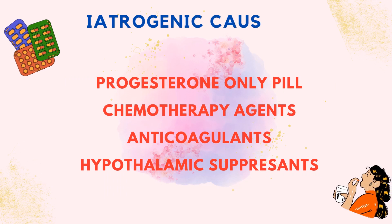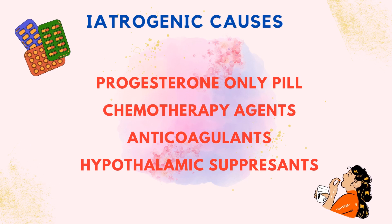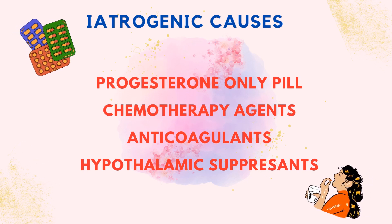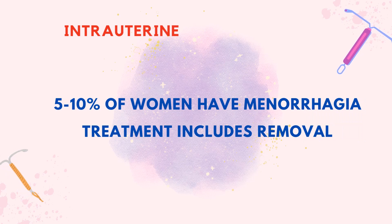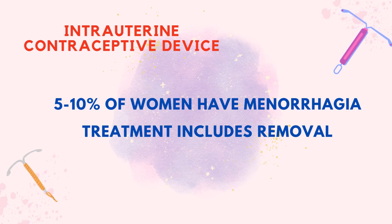The iatrogenic causes relate to any kind of medications or treatment. Medicines causing menorrhagia include progesterone-only contraceptive pills, chemotherapy agents, anticoagulants, and hypothalamic suppressant drugs. Another important cause is the intrauterine contraceptive device — about 5 to 10 percent of women wearing the device suffer from menorrhagia in the first few months. Treating the bleeding may require removal of the device and choosing another birth control method.